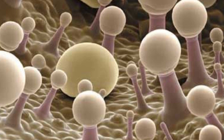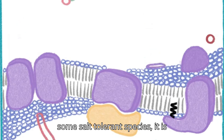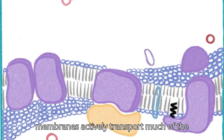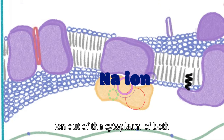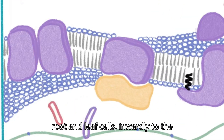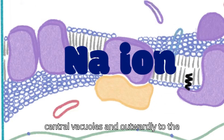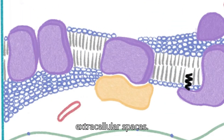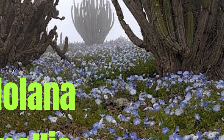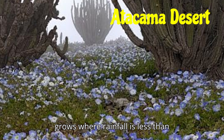In some halophytes, observable salt glands on the leaves are present, sometimes consisting of only two cells. Although sodium ions are essential for some salt-tolerant species, it is probable that sodium pumps in cell membranes actively transport much of the ion out of the cytoplasm of both root and leaf cells — inwardly to the central vacuoles and outwardly to the extracellular spaces. Nolana mollis, a dominant succulent shrub of the Atacama Desert, grows where rainfall is less than 25 millimeters.